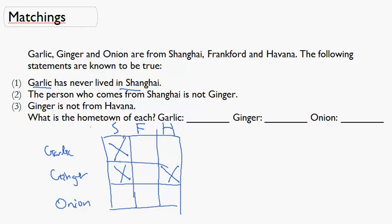So what does this tell us? Well, by process of elimination: if ginger is not from Shanghai and garlic is not from Shanghai, then onion must be from Shanghai. Ginger is not from Shanghai and ginger is not from Havana, so ginger must be from Frankfurt. The check there means the rest of that row and column are X's. And that means garlic must be from Havana. So: garlic is from Havana, ginger is from Frankfurt, and onion is from Shanghai.